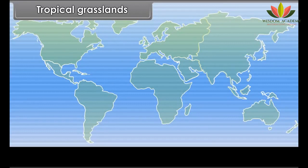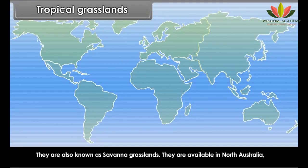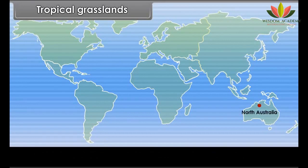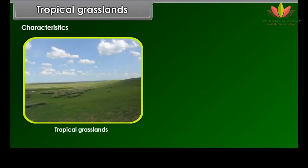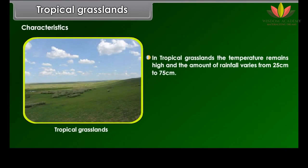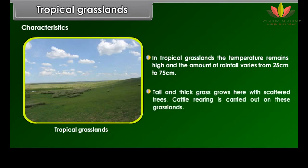Tropical grasslands are also known as savannah grasslands. They are found in North Australia, Central America, the Brazilian highlands, parts of Bolivia, Paraguay, Argentina and in African areas. Characteristics: The temperature remains high and the amount of rainfall varies from 25 cm to 75 cm. Tall and thick grass grows here with scattered trees. Cattle rearing is carried out on these grasslands.